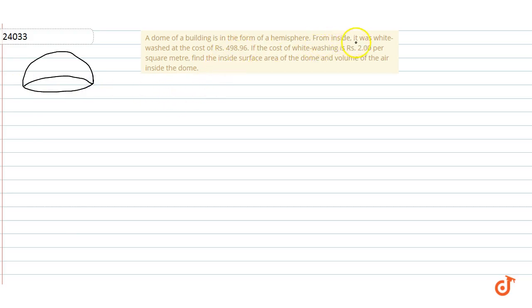They said that from inside it was whitewashed at the cost of rupees 498.96. If the cost of whitewashing is rupees 2 per square meter, find the inside surface area of the dome and the volume of air inside the dome. We have to find inside surface area and volume.